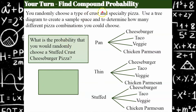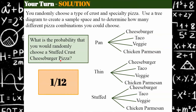So now let's use this to find probability. I want to know what is the probability that I'm going to randomly choose a stuffed crust pizza that is cheeseburger. Go ahead and see if you can calculate that compound probability — remember it's compound because it's two events: choosing the type of crust and the type of pizza. Welcome back. The answer is one out of 12 because there's only one stuffed crust cheeseburger option — only one of these branches represents both of those — so one out of all 12 in my sample space.